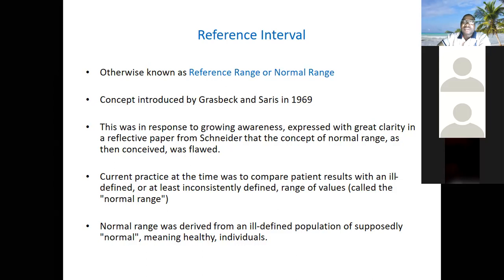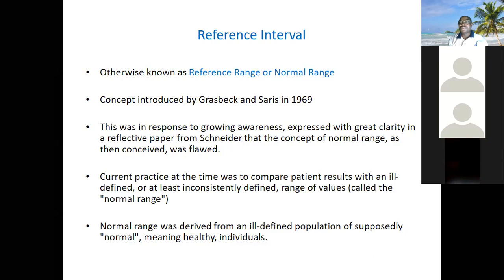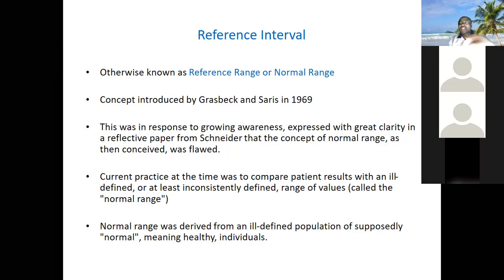Reference interval is otherwise known as reference range or normal range. The concept was introduced by Gatzberg and Sally's in 1969, in response to growing awareness — expressed with great clarity in a paper from Snader — that the concept of 'normal range' as then conceived was flawed. People came up with 'reference interval' to address this.